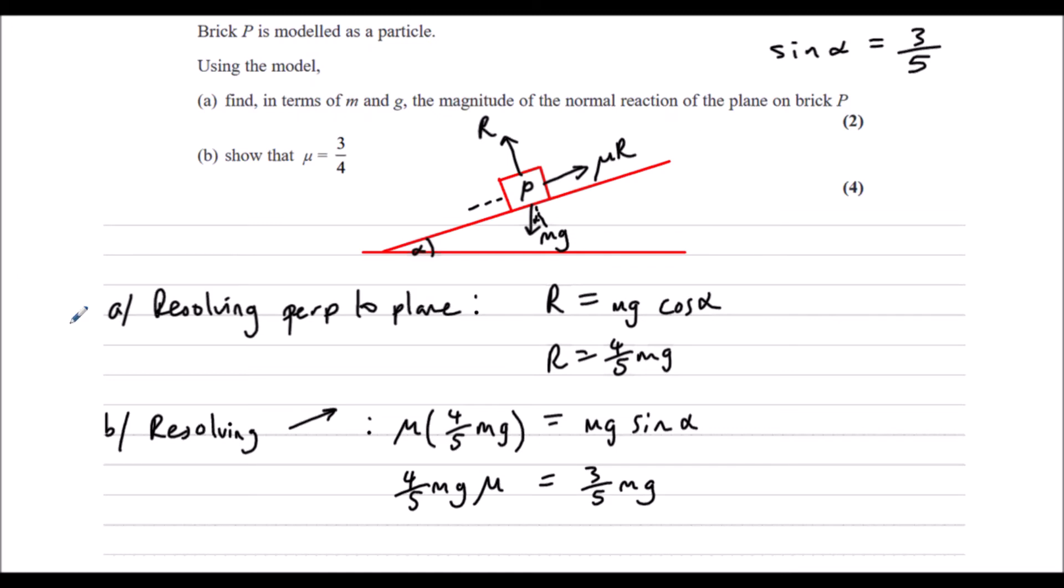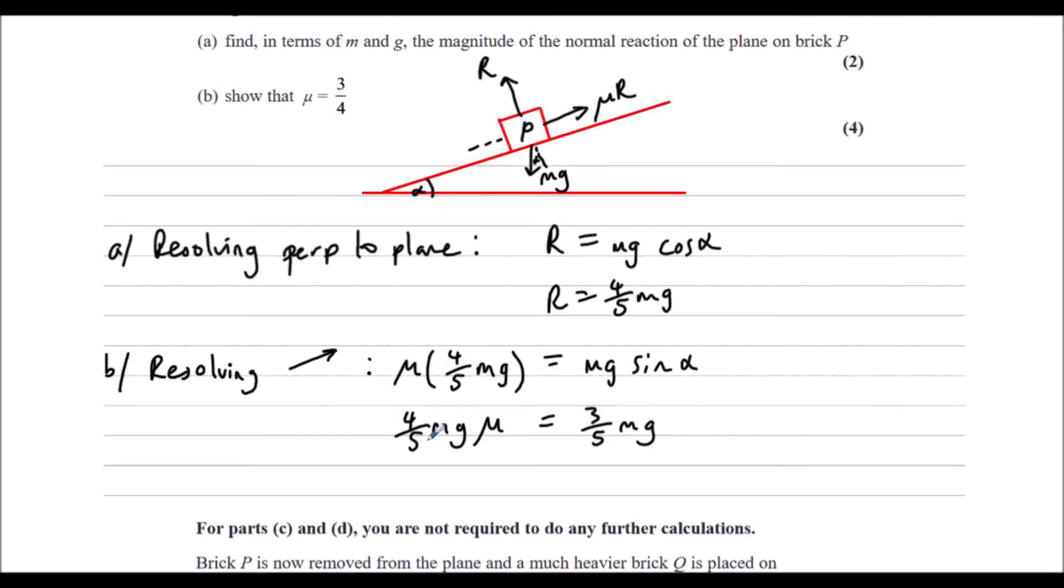And then we can just simplify this. So divide both sides by mg. Times both sides by 5. That leaves us 4 mu equals 3. Divide both sides by 4. Mu is 3 quarters.